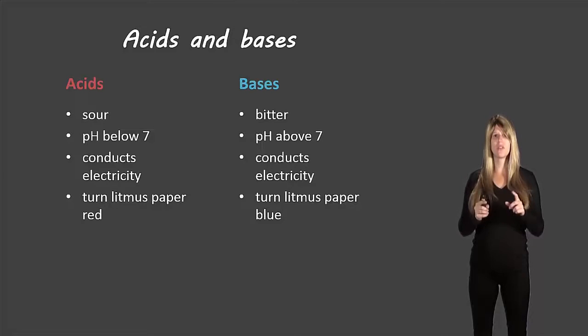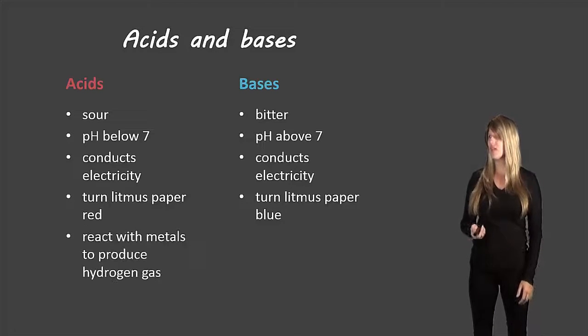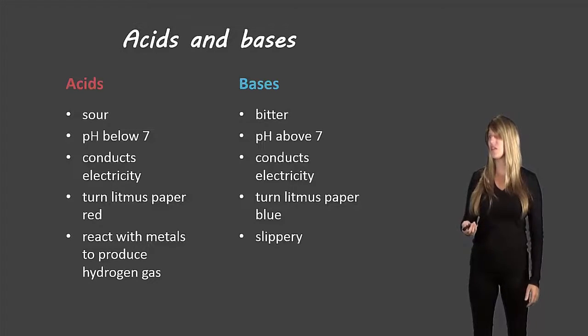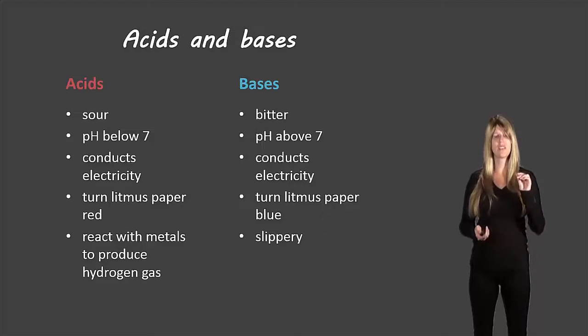A good way to remember the difference between which one turns which color: base starts with B and blue starts with B, so a base turns litmus paper blue. Acids react with metals to produce hydrogen gas. That's an interesting characteristic about them. And bases are very slippery, which is also an interesting characteristic about them.